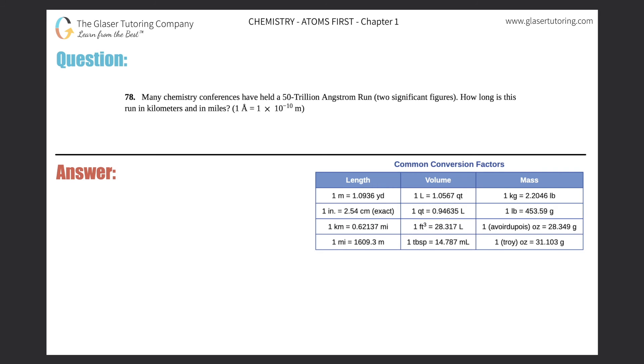Number 78: Many chemistry conferences have held a 50 trillion angstrom run to two significant figures. How long is this run in kilometers and in miles? And they give us a conversion: one angstrom equals 1 times 10 to the negative 10 meters. So it looks like we're going to be doing two specific conversions here. We first have to know how long this is in kilometers, and then we have to know how long this is in miles. So the first thing is, let's break down this 50 trillion angstrom run.